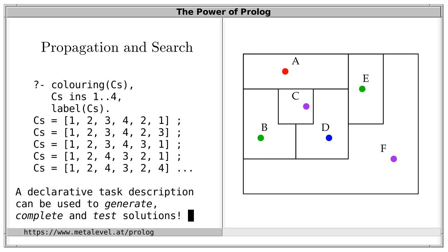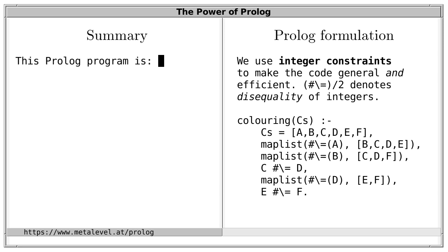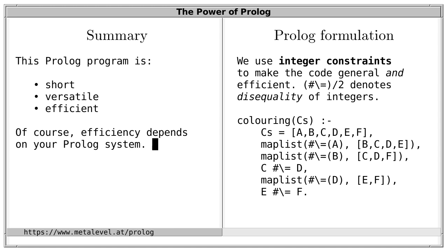Also, we can use the same code to complete partial solutions to generate new solutions and also to test whether a fully specified coloring is a solution. And we can also try different search strategies without any modifications to the core program. So, this is a very versatile program. In summary, this solution is short, versatile, and also efficient. Of course, efficiency depends a lot on your Prolog system. And if you have to solve hard combinatorial tasks, use a Prolog system with a fast constraint solver for best results.